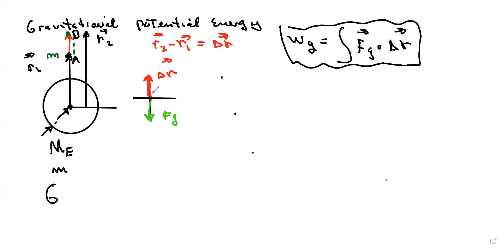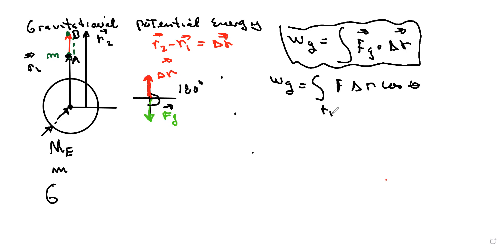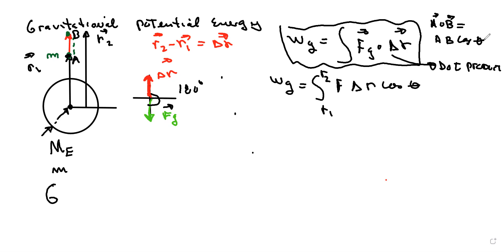The work done by gravity is the integral of F times delta r times the cosine of theta, from r1 to r2. The dot product of two vectors A·B equals the magnitude of A times the magnitude of B times the cosine of the angle between them.